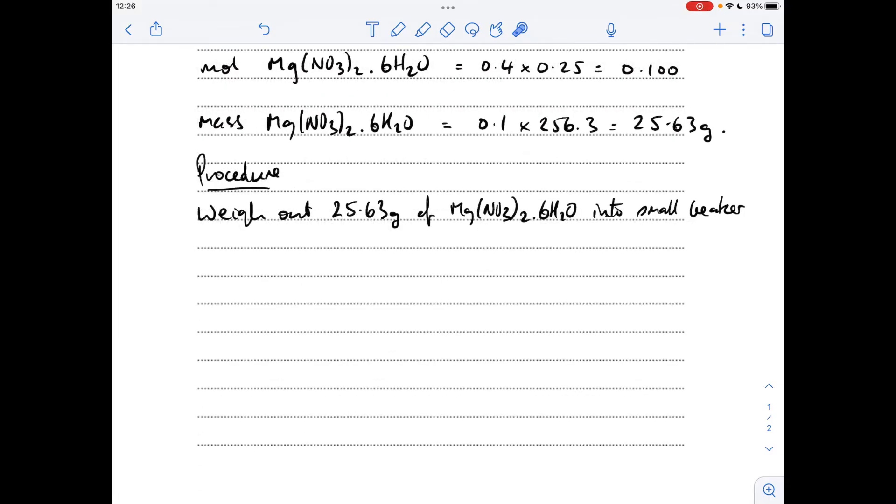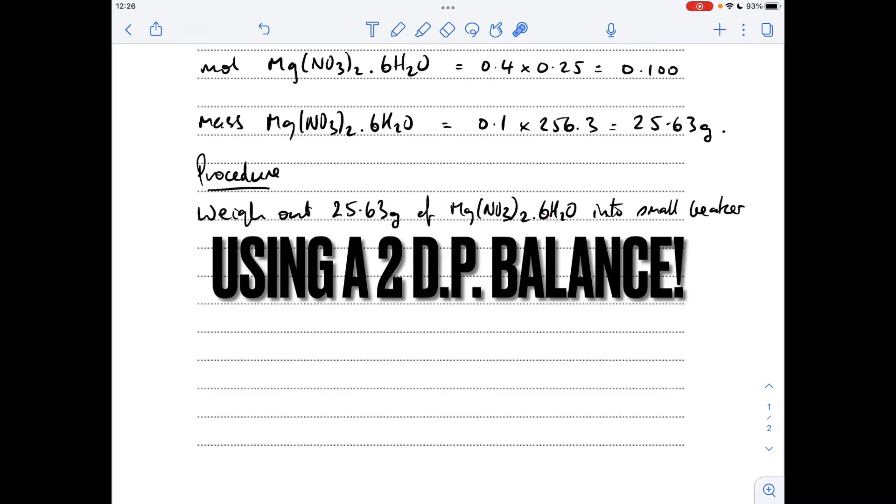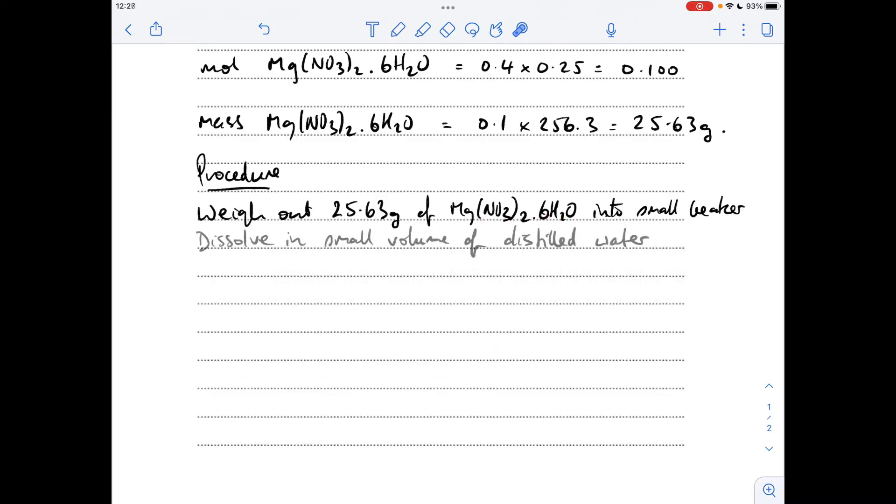So we'll proceed now. The first thing we do is weigh out that 25.63 grams of the hydrated salt into a small beaker. We dissolve that in a small volume of distilled water, or you could say deionized water there.